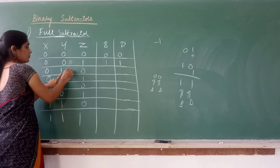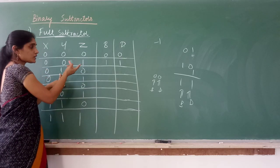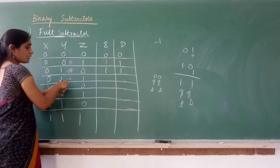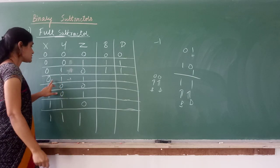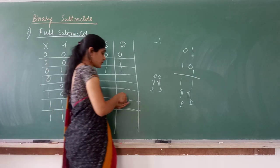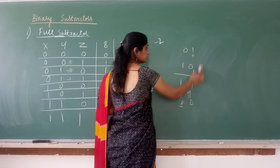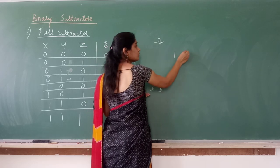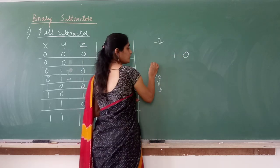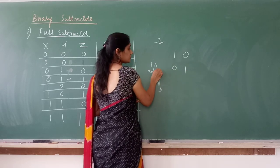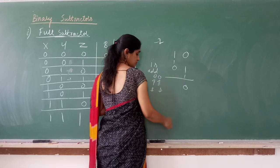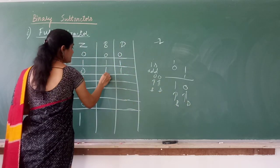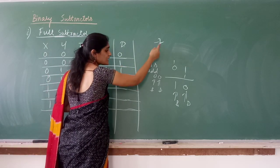For x=0,y=1,z=0: 0 minus 1 minus 0 equals minus 1. Binary of minus 1 is 11, so difference=1, borrow=1. For x=0,y=1,z=1: 0 minus 1 is minus 1, then minus 1 minus 1 is minus 2. Binary of minus 2: start with 10, 1's complement is 01, add 1 gives 10. So borrow=1, difference=0.